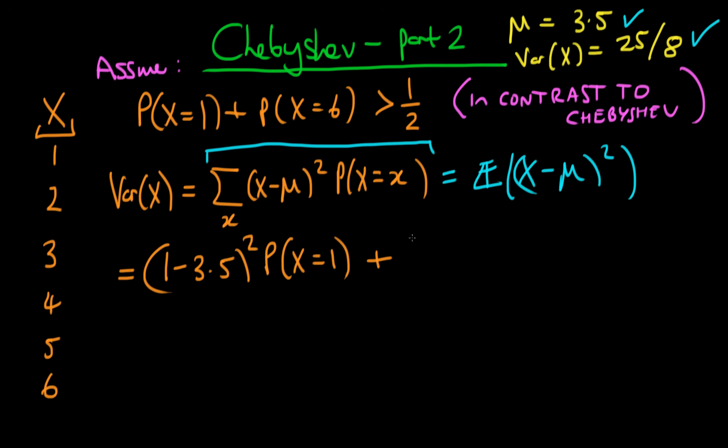The second term is going to be 2 minus 3.5 all squared times the probability that x equals 2. And then we're going to continue on up until we get to the last term. The last term is just going to be 6 minus 3.5 all squared times the probability that x equals 6.